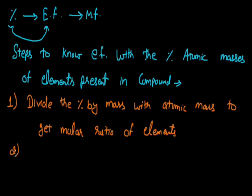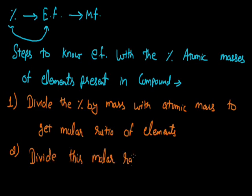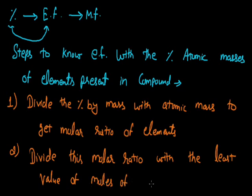As we have the molar ratio of these elements, they can be used to write the subscript of atoms and we can find the empirical formula. But since the empirical formula is the simplest molar ratio of elements, if these molar ratios are not in the simplest form, we will divide the ratio of each element by the least value of the molar ratio.